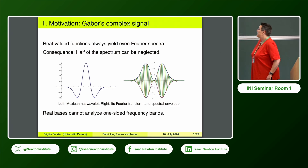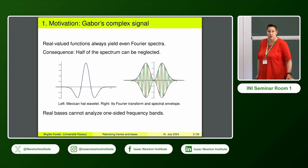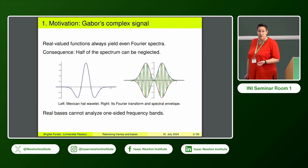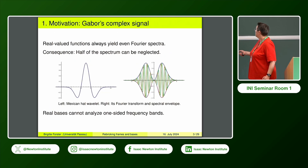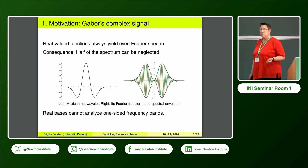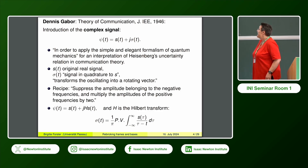The original idea that Gabor brought was the following. If we start with a real-valued function or signal from some measurements and look at the Fourier spectrum—the absolute value of the Fourier transform—then it's always an even Fourier spectrum. Because the even part of the signal gives an even real Fourier transform and the odd part gives an imaginary odd part, and hence we get a symmetric spectrum. From an engineering point of view, you cannot analyze single-sided frequency bands with real bases.